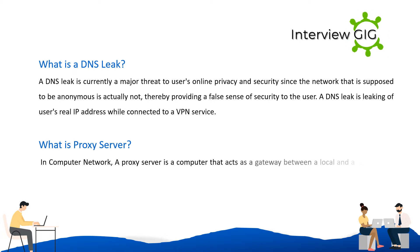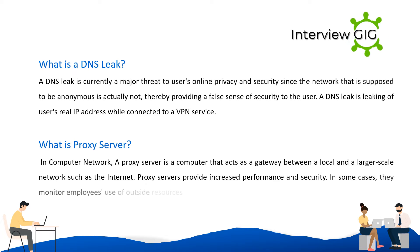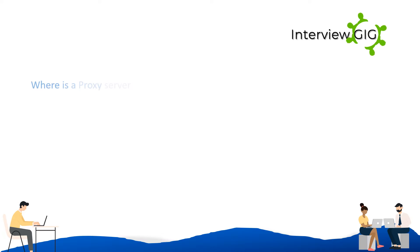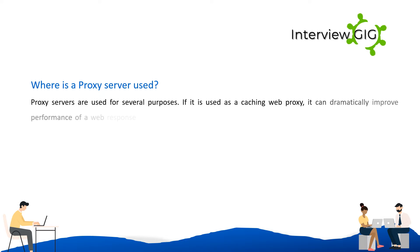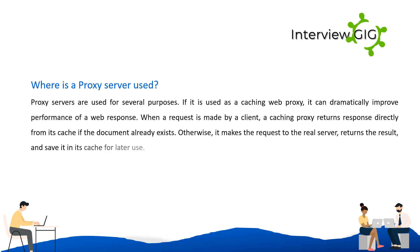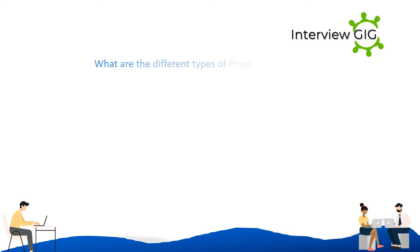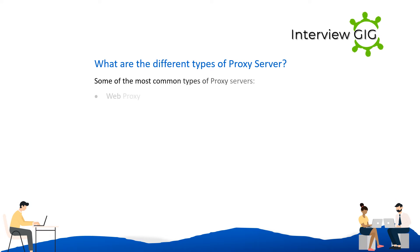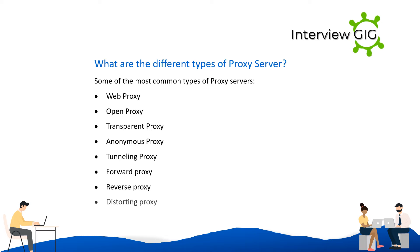What is a proxy server? In a computer network, a proxy server is a computer that acts as a gateway between a local and a larger-scale network such as the internet. Proxy servers provide increased performance and security, and in some cases monitor employee use of outside resources. Proxy servers are used for several purposes — as a caching web proxy, they can dramatically improve web response performance. Some of the most common types of proxy servers include web proxy, open proxy, transparent proxy, anonymous proxy, tunneling proxy, forward proxy, and reverse proxy.